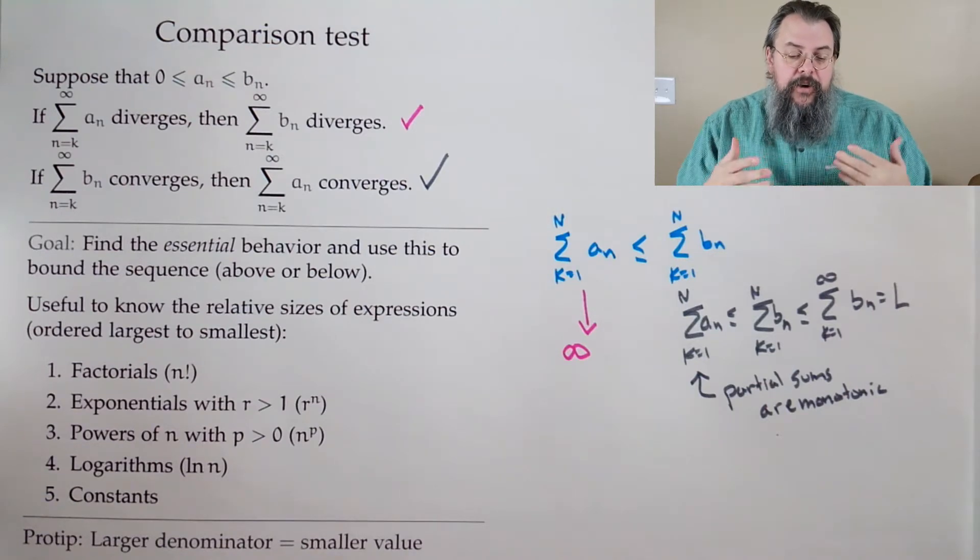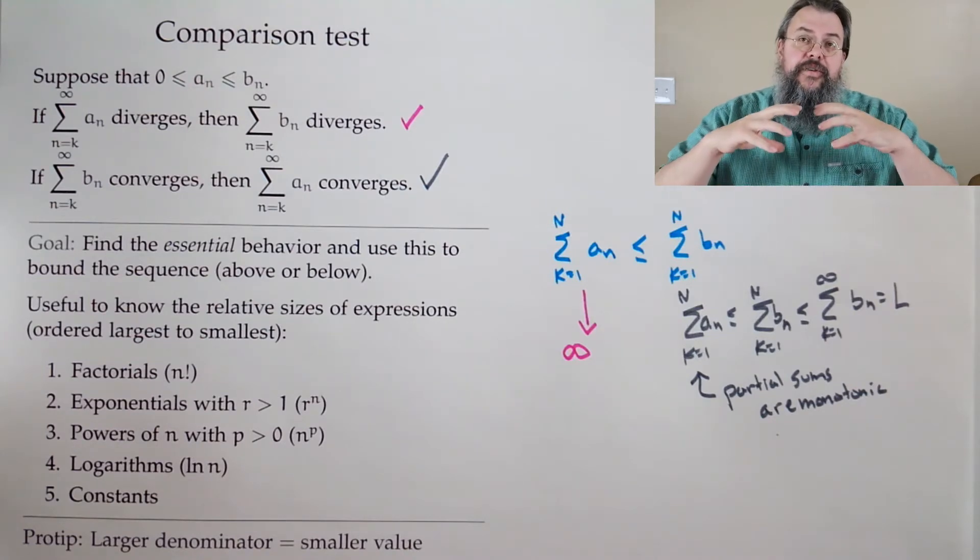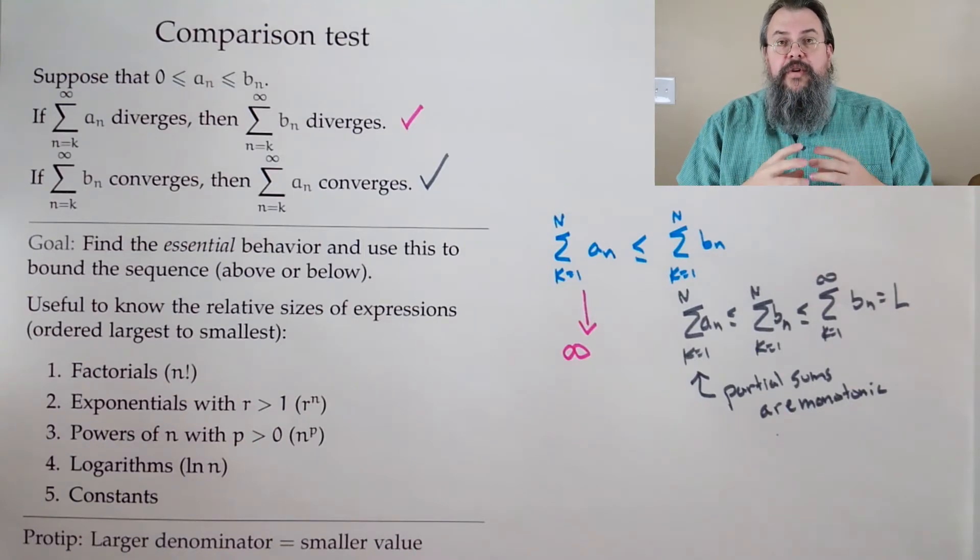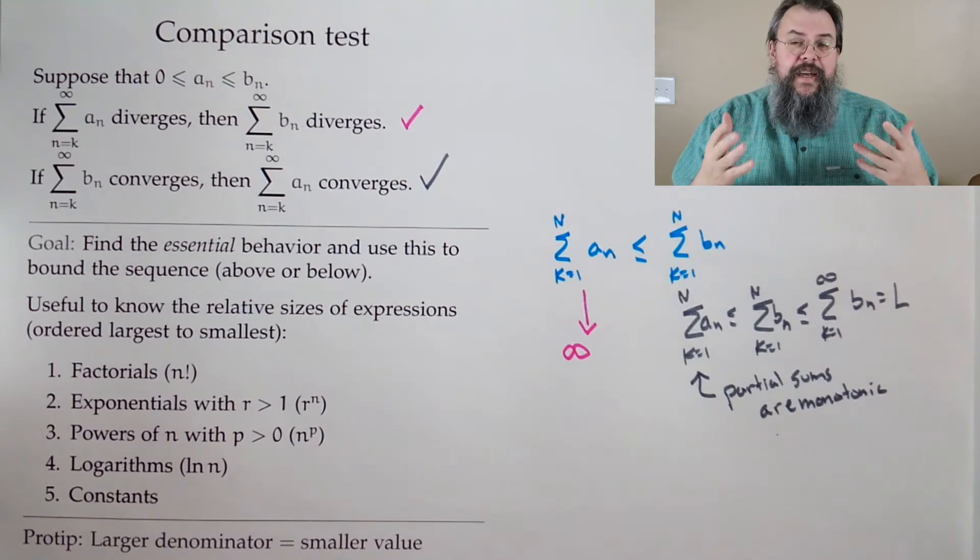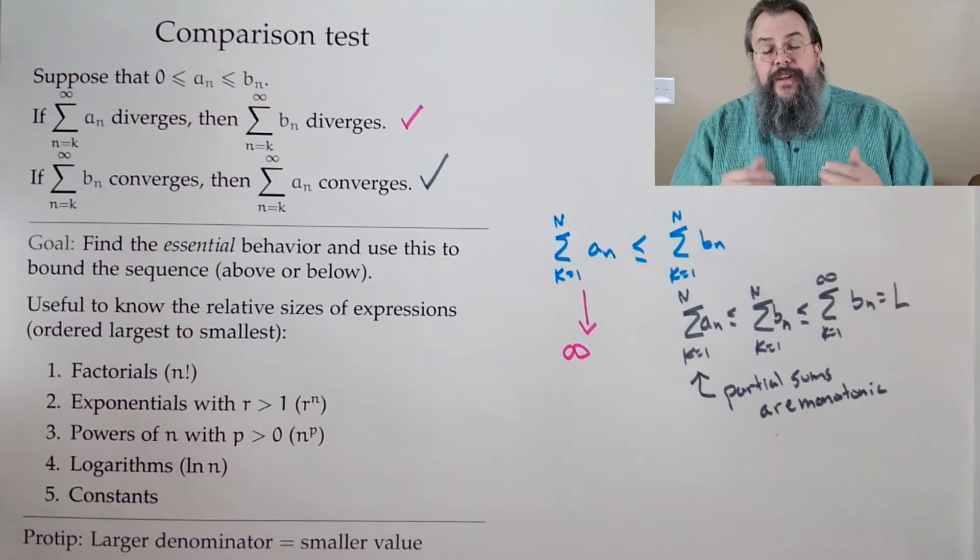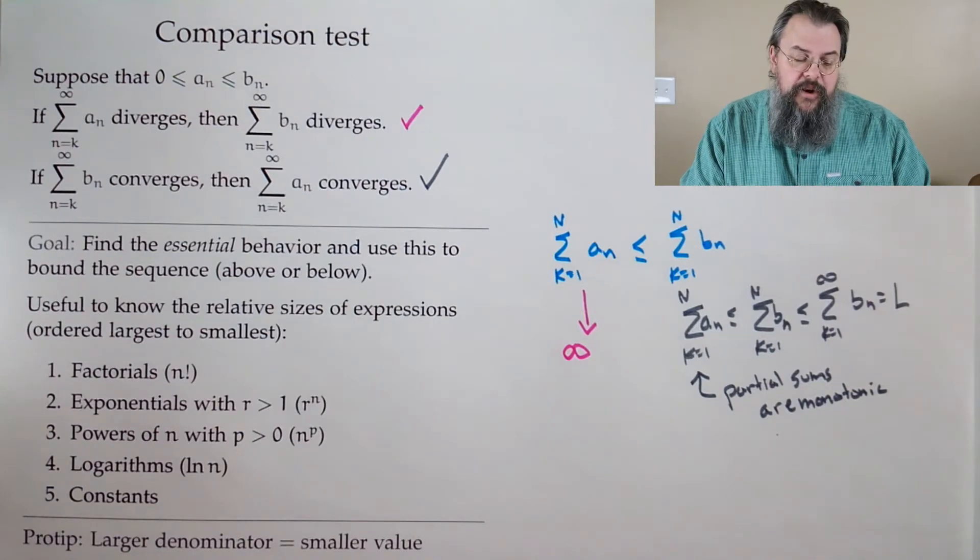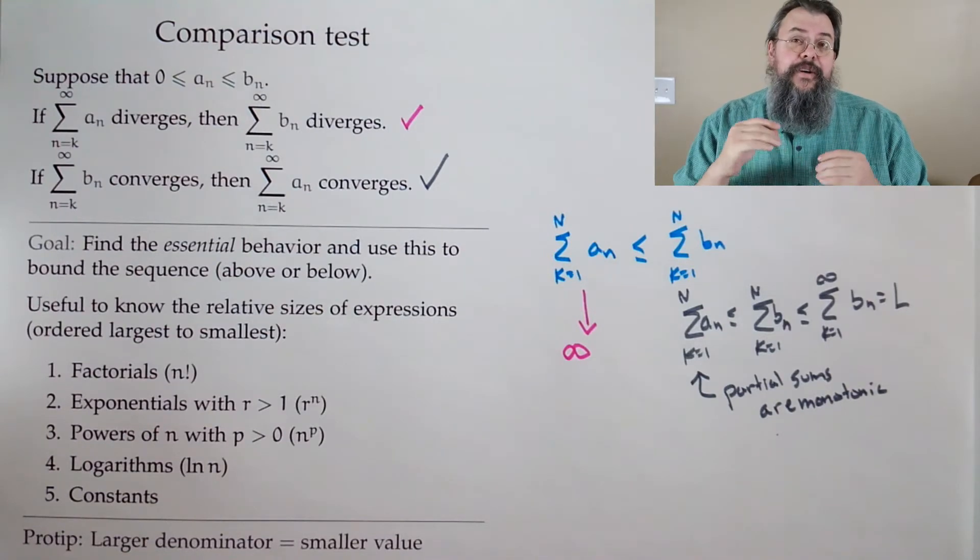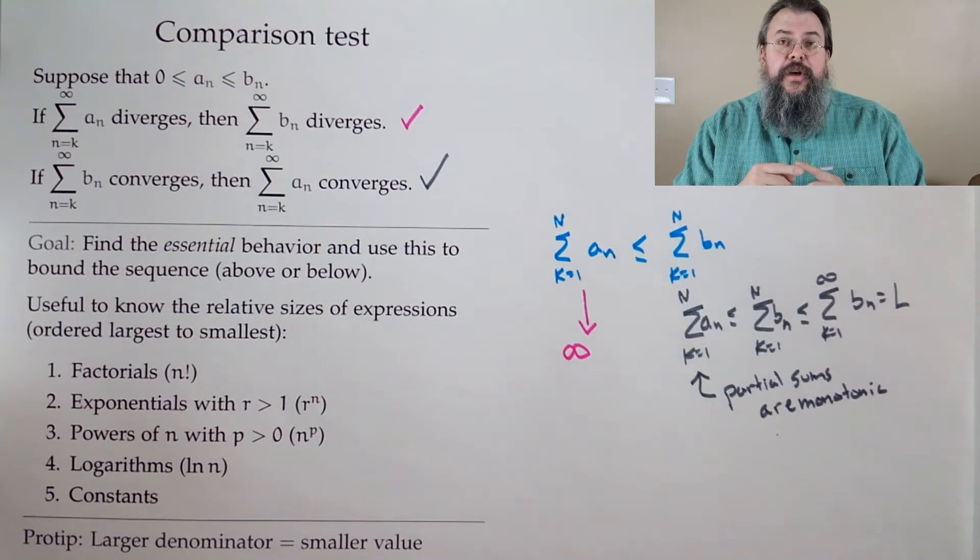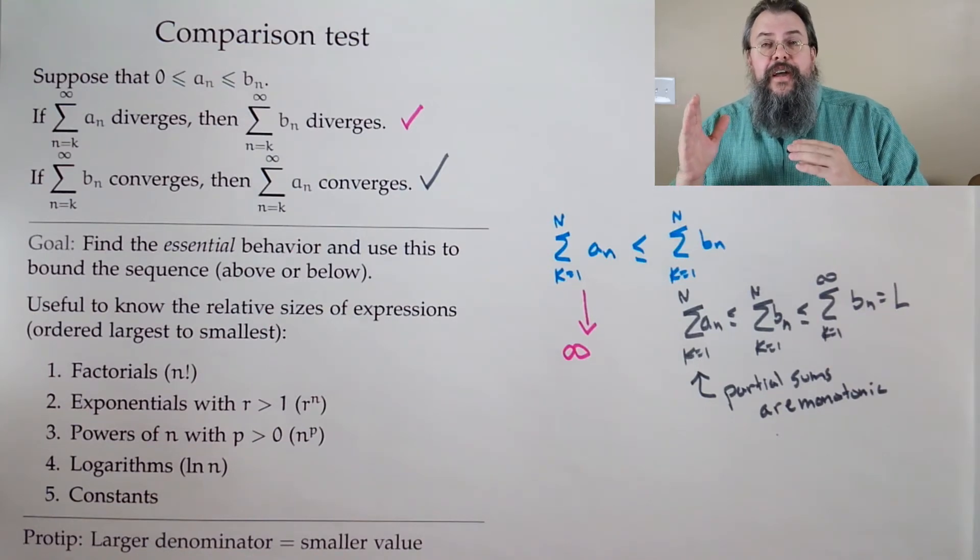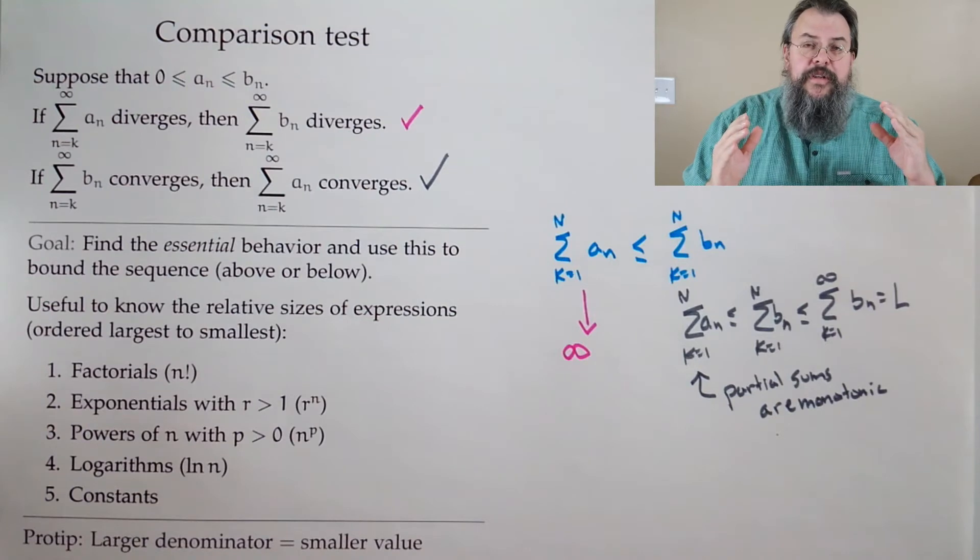It says, look, if our sum b sub n is finite, our sum a sub n is at most whatever that finite is. So I can't have an infinite thing that somehow squeezes in below a finite thing. Now, how do we use this? What we do is we look for ways to take our expression for b sub n and to somehow break it down, relate to something simpler. Oftentimes, when we talk about simplifying expression, what we really mean is taking out things like addition and subtraction. And so phrased another way, find the essential behavior, what's really going on, and use that to bound either above or below.